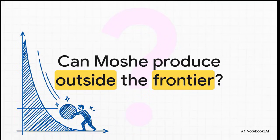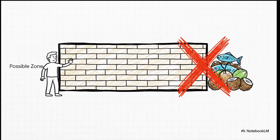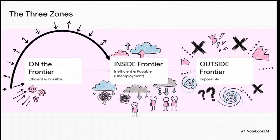We've covered the line — that's efficient. Inside the line — that's inefficient, unemployment. So what about outside the frontier? Is that even possible for Moshe? The answer is nope — can't be done. Think of the frontier as a hard wall. It is the absolute maximum he can produce with the resources he has, which in this case is his 12 hours of work. Anything beyond that line is, for now, just a fantasy. So we've mapped out three distinct zones: on the frontier — efficient and possible; inside the frontier — possible but inefficient; outside the frontier — impossible.